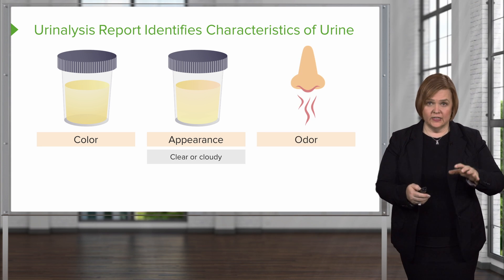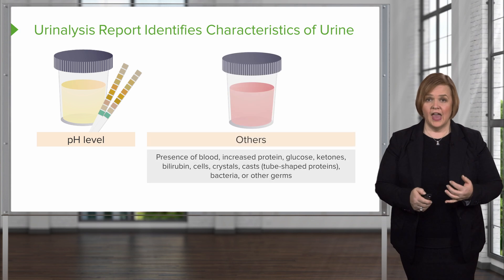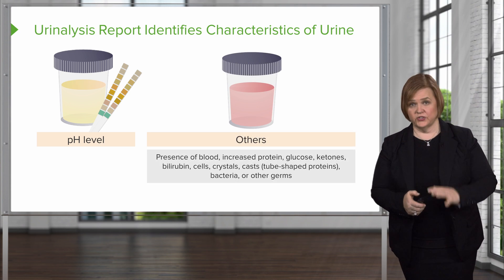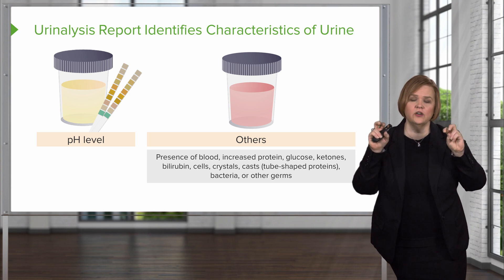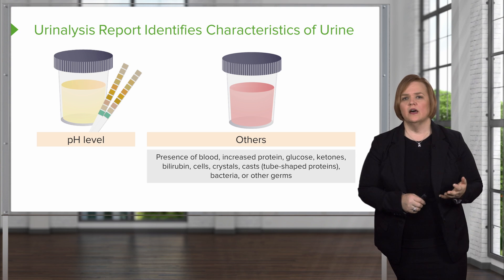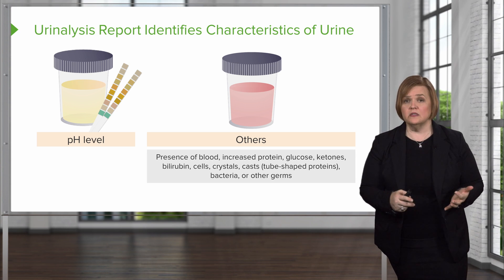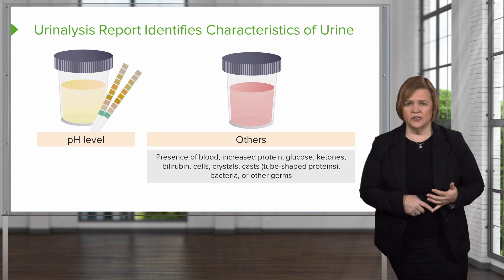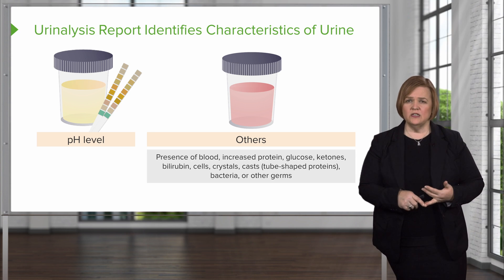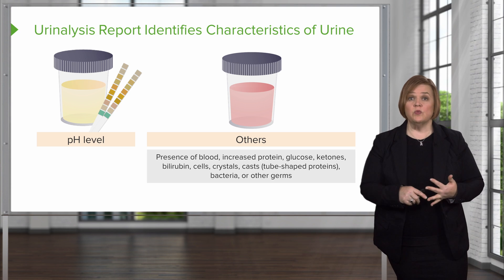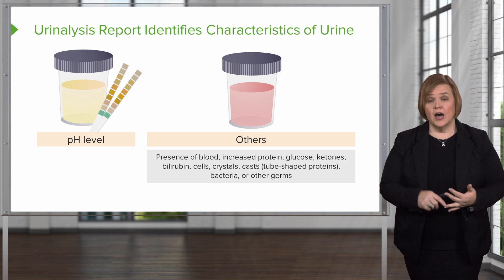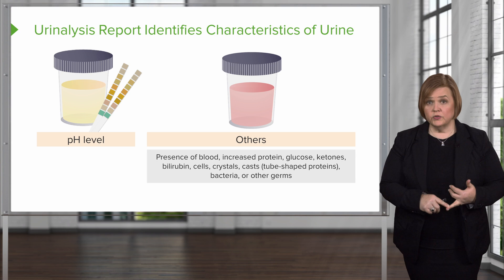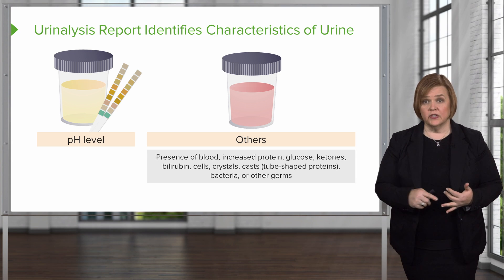When we talk about pH level and all the other substances that could be present in the urine, each one of these categories gives us an idea of what's going on in the body. Blood could be a sign of infection or trauma to the urinary tract. Increased protein tells us that the kidneys aren't doing well, and we watch that very closely in diabetic patients because they're at increased risk for kidney damage. We watch their protein levels in the urine closely as an indication of kidney function.